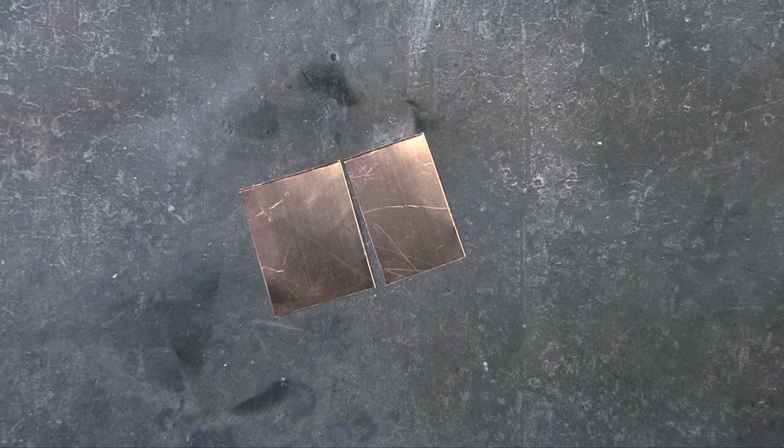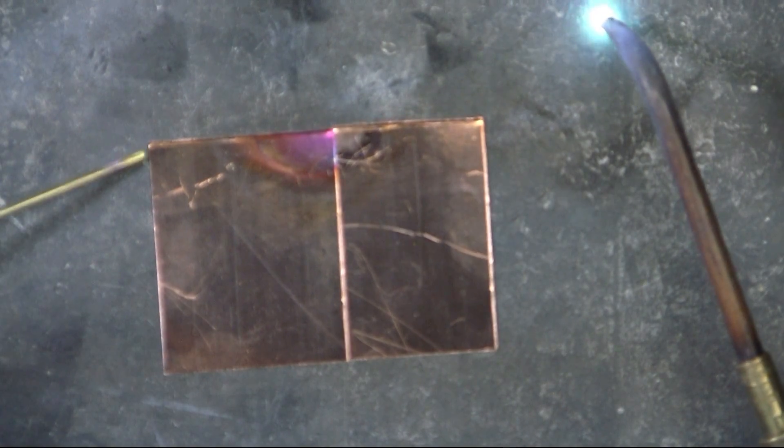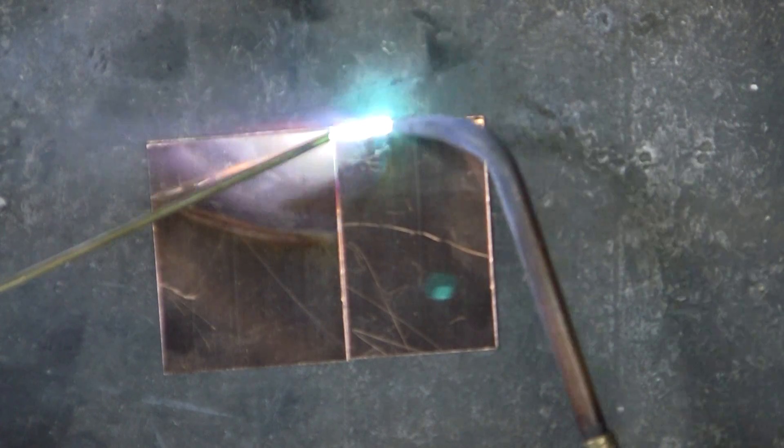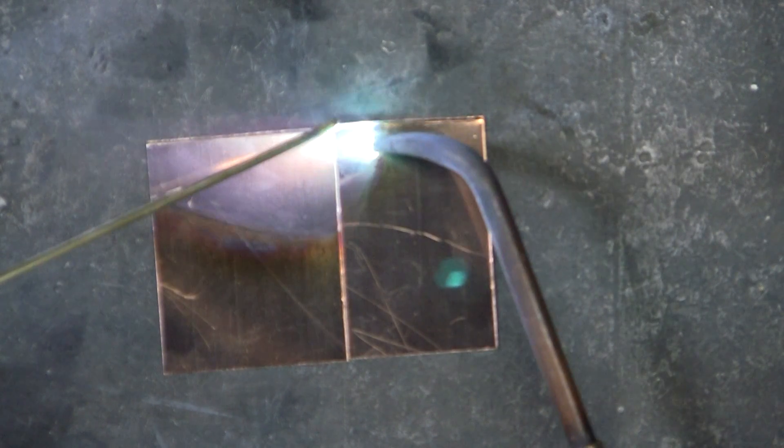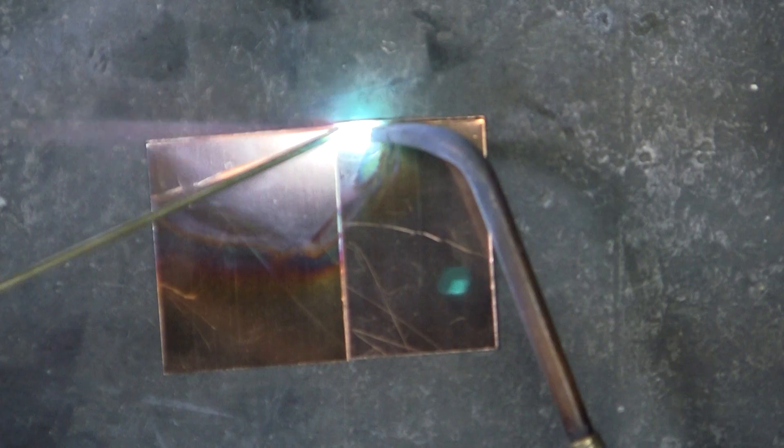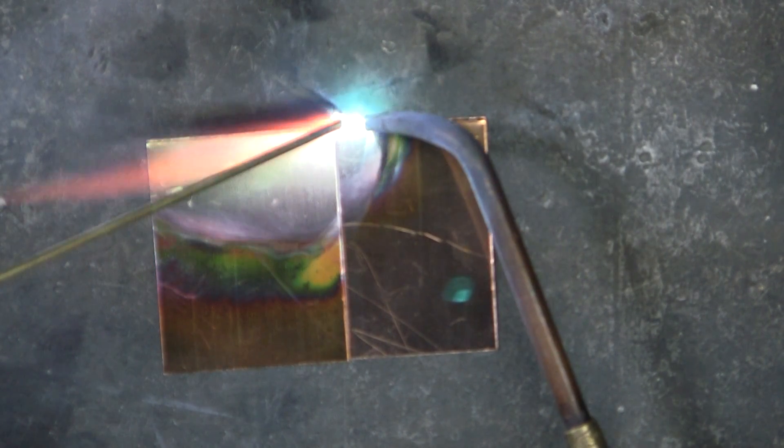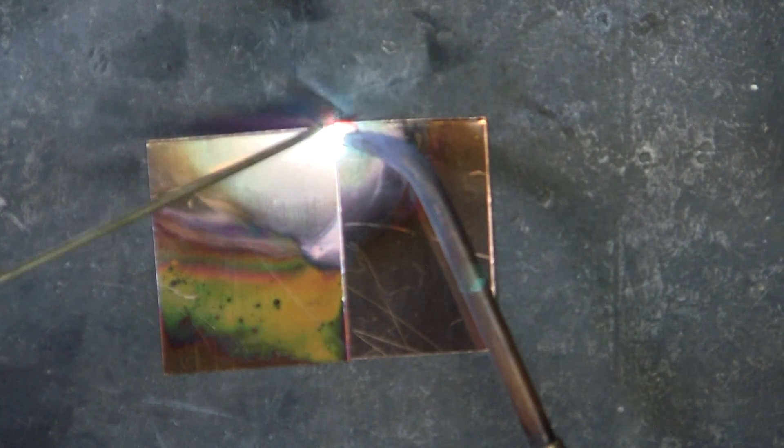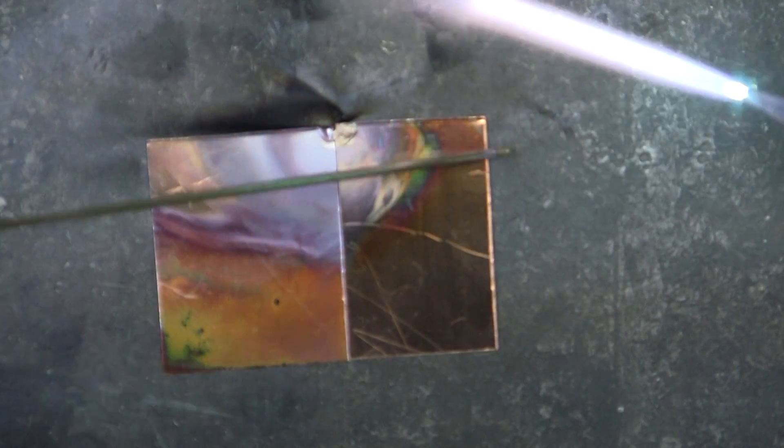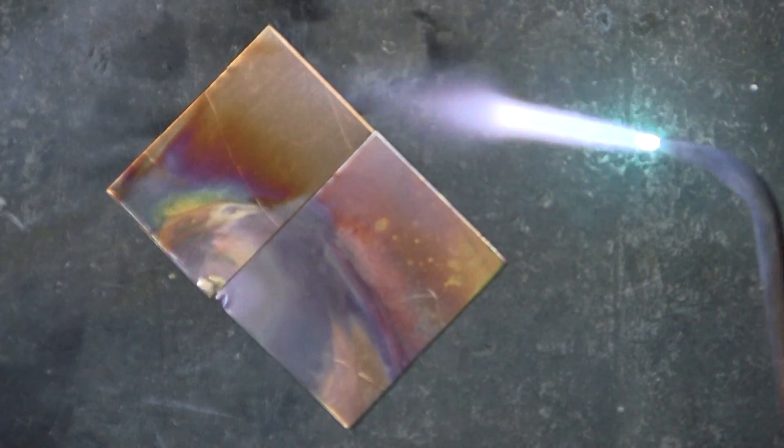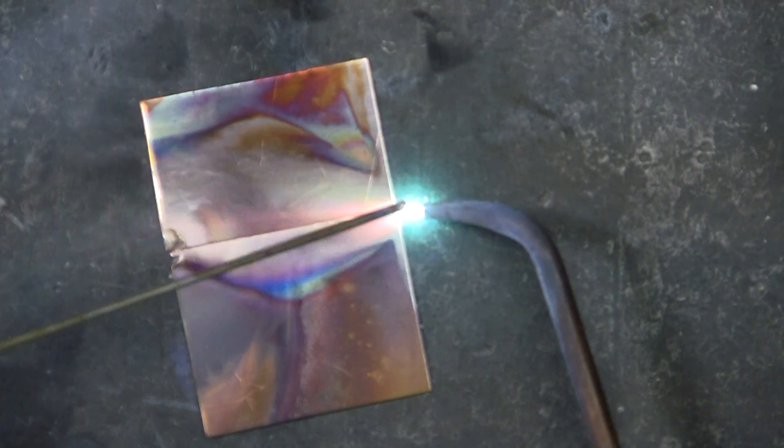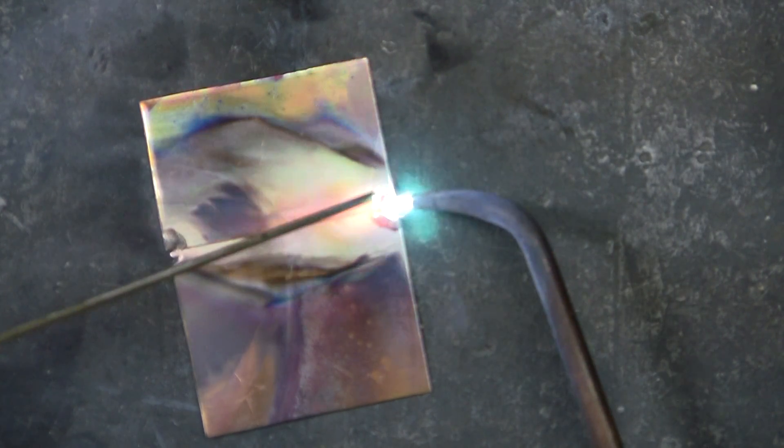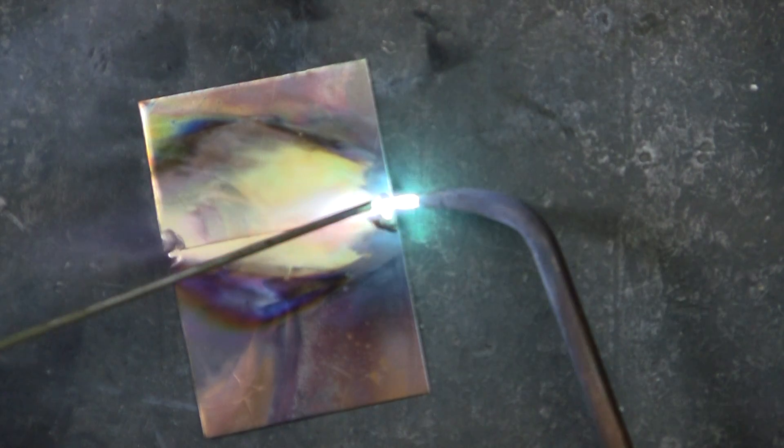Here are two pieces of 16 ounce copper, or about 25 gauge, and I'm brazing these together using oxygen, the sunlean, and a 3-32nd brazing rod. Getting the copper red hot and then brazing this butt joint where the two pieces are just butted up against each other.